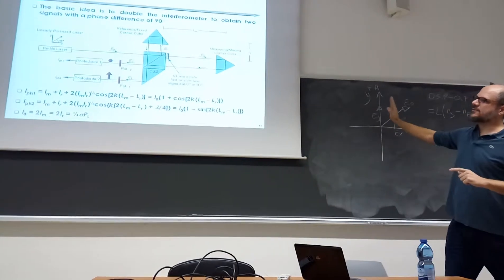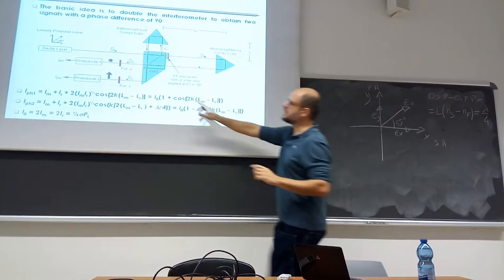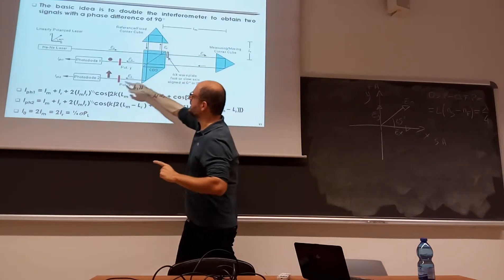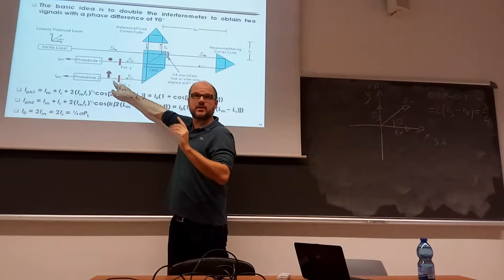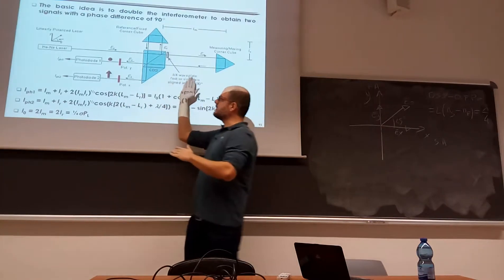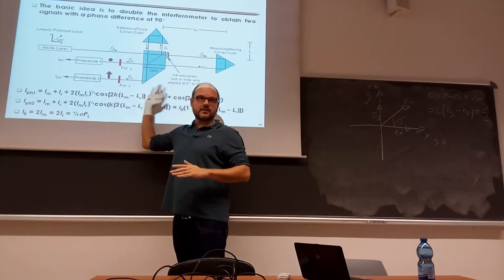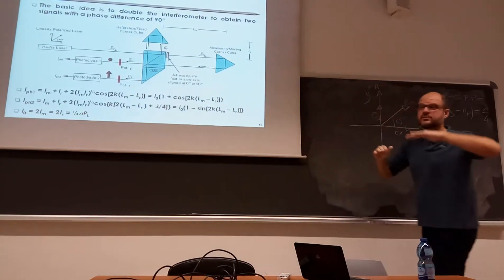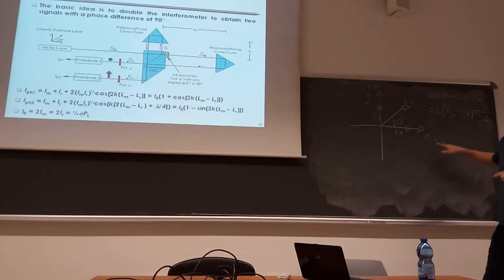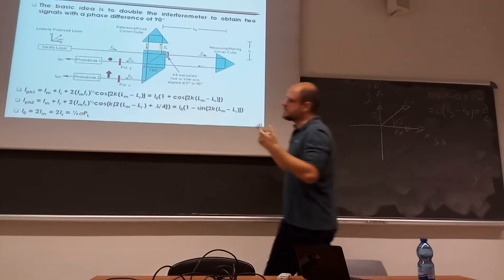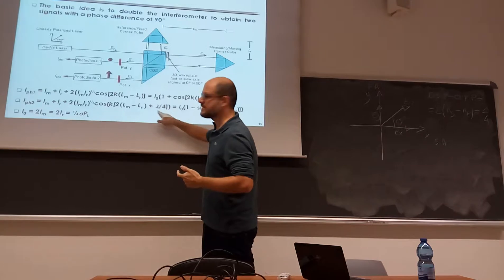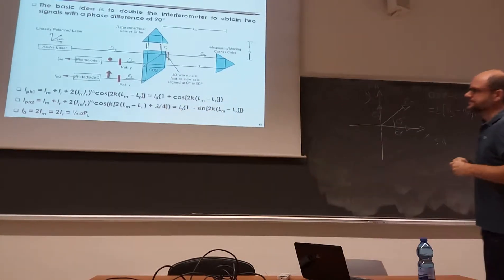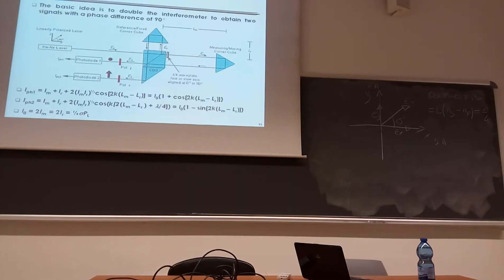The measuring field sees the fast axis, so I don't see the extra path in this first signal. I see the extra path in the second signal, because now I use a polarizer that passes the light that is planar to the slide. The component of the measuring field that is planar to the slide sees the slow axis, and for this reason I see the path difference here.